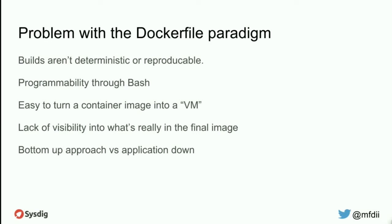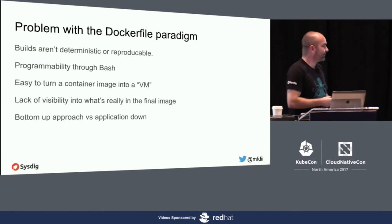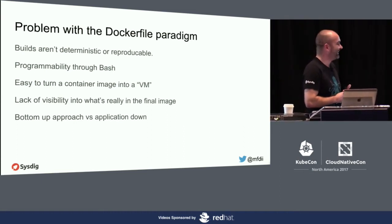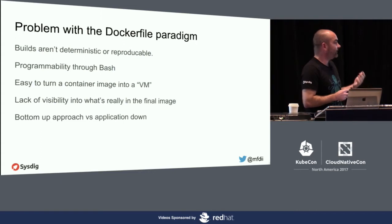The other issue is that Dockerfiles use Bash to program things, which frustrated me back in 2014 when Docker was getting popular. We've had this great history of config management and deterministic languages — Puppet, CFEngine, Chef, Ansible — and we fell back to automating everything with Bash. And this makes it very easy to turn a container image into a VM. Look at the very first line of almost any Dockerfile: 'FROM' — and you're going from an operating system image.